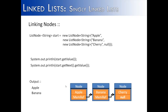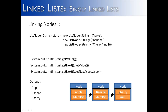To get the last value, cherry, we start at the first node, look at its memory reference, go to the next node, look at its memory reference, then go to that node and look at the value inside, which is cherry.